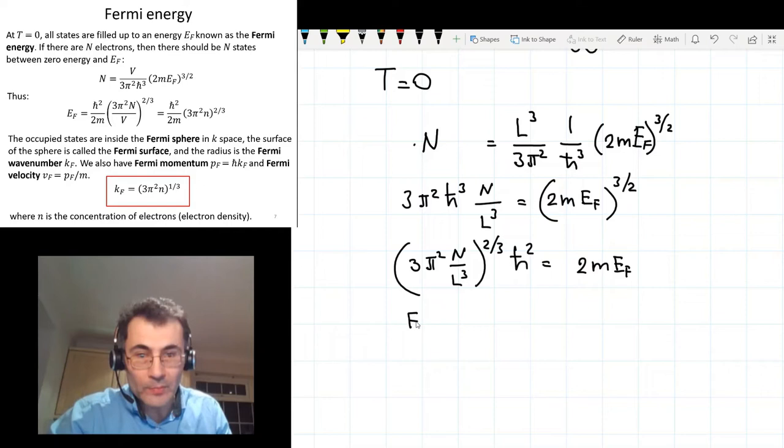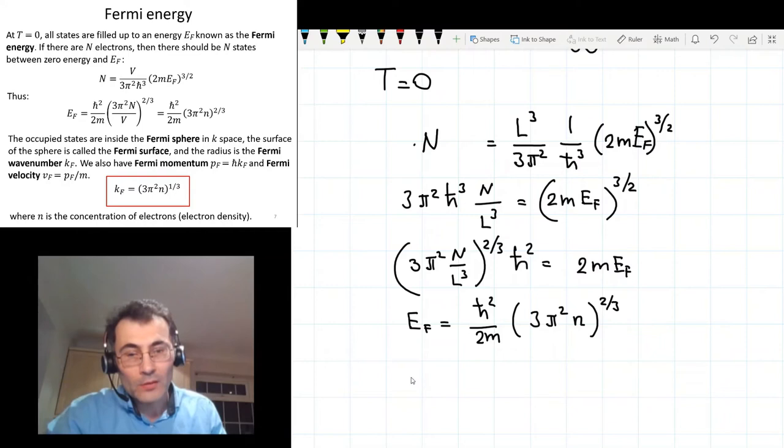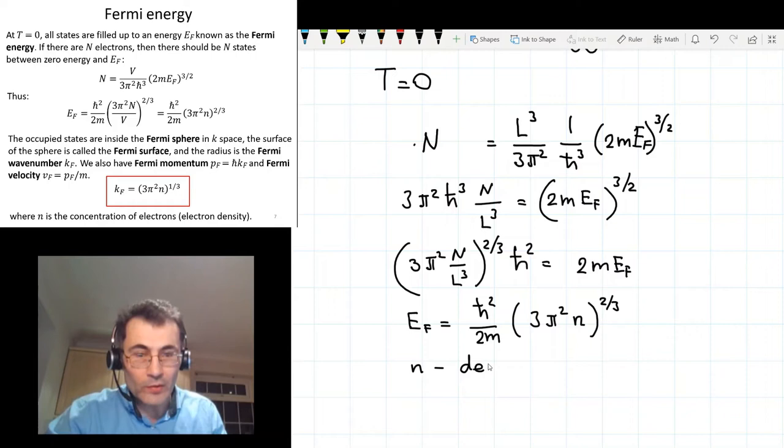And this brings me to my final expression. So the Fermi energy is ℏ² divided by 2m times 3π². And instead of N divided by L³, which is the total number of electrons divided by the volume of my crystal, I will write the concentration of electrons because that's what it is. So the concentration of electrons, number of electrons per unit volume to the power 2 thirds. So n is the concentration or the density of electrons.